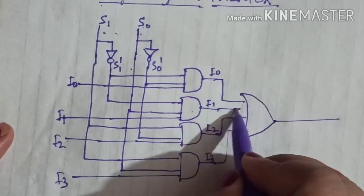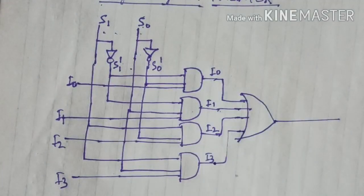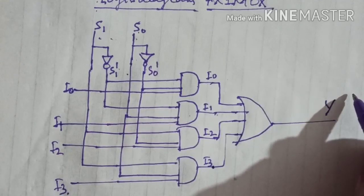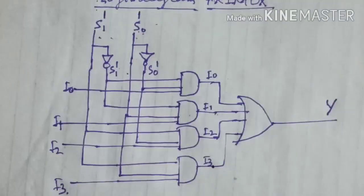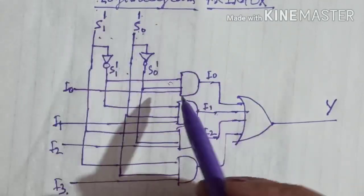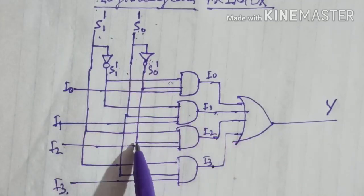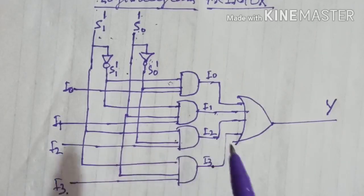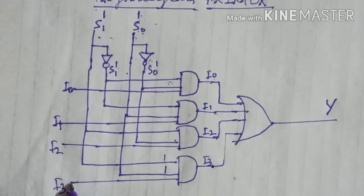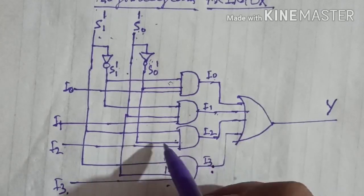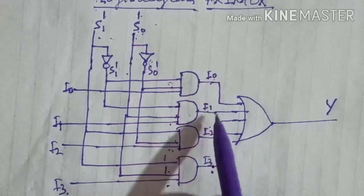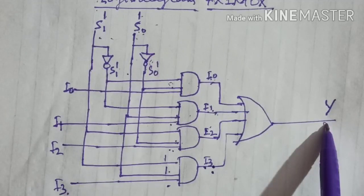In charo mein se koi ek output final output hoga, toh hum in sabhi AND gate outputs ko ek OR gate mein lagayenge. Ab yeh circuit kaise kaam karega — suppose I3 input output par jaani hai. Toh selection inputs ki values hongi 1, 1 (binary of 3). Jab S1=1 S0=1 hoga toh S1' aur S0' dono 0 honge, jis wajah se pehle teen AND gates ka output 0 hoga. Lekin fourth AND gate mein S1=1, S0=1 aur I3 jaayega, toh output = 1·1·I3 = I3. OR gate se final output I3 aayega.